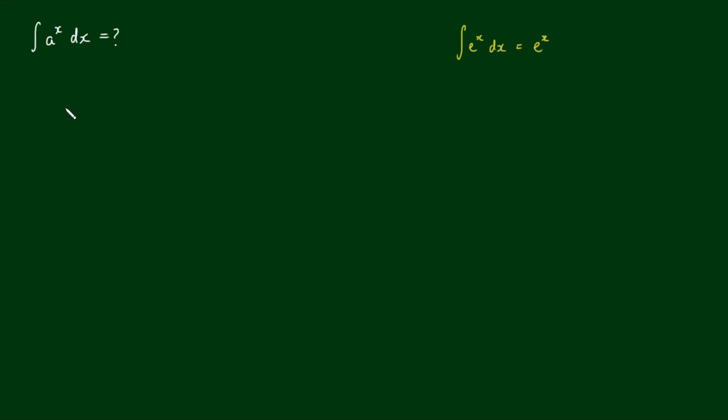So in order to carry out this integral, we need to transform this integrand here from a to the x to e to the something. So with some trickery by log laws, I can write a to the x as being equal to e to the natural log of a to the power of x.